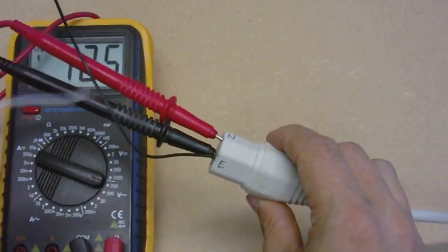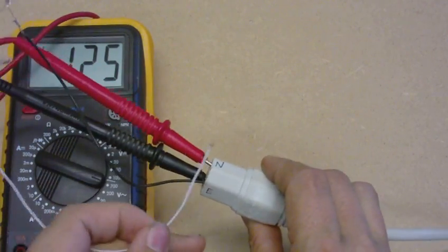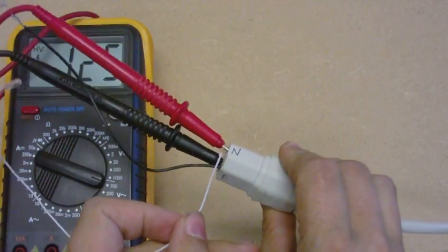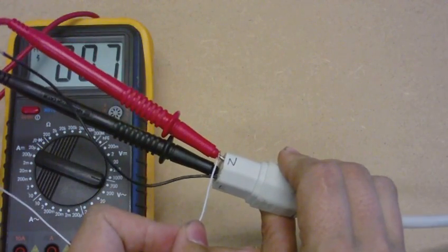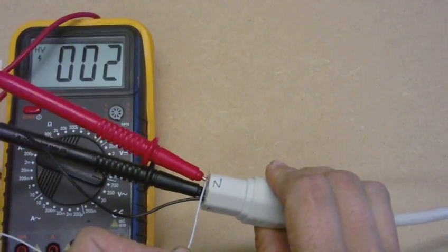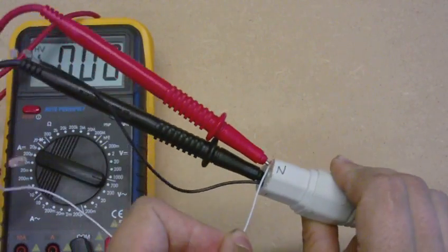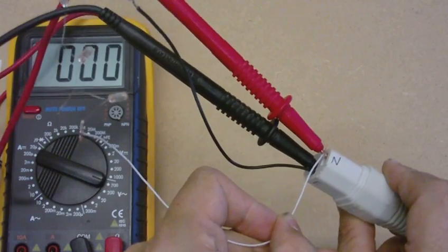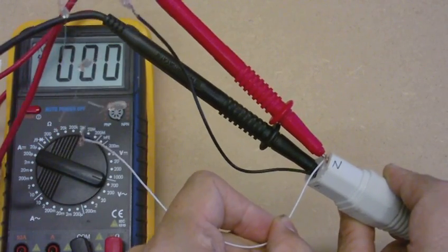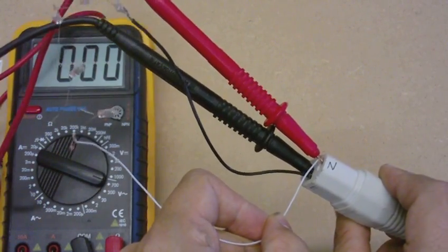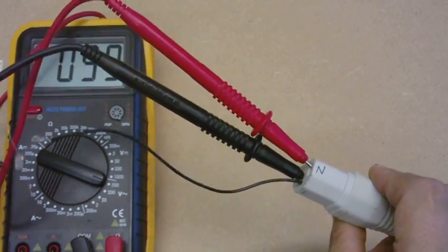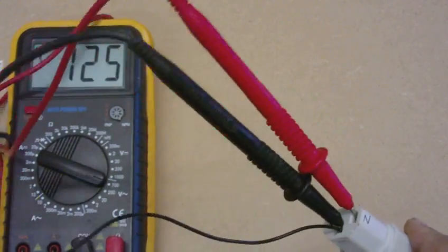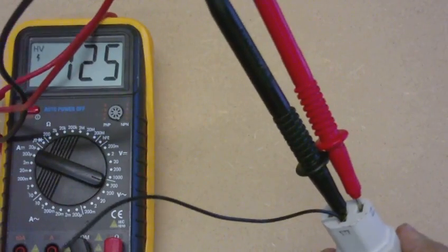Now I'm going to connect the other end to the neutral and observe what happens. The voltage drops back down to zero and there is no light coming from the bulbs at all. Yet when I disconnect the bulbs, right back up to 125 volts again.